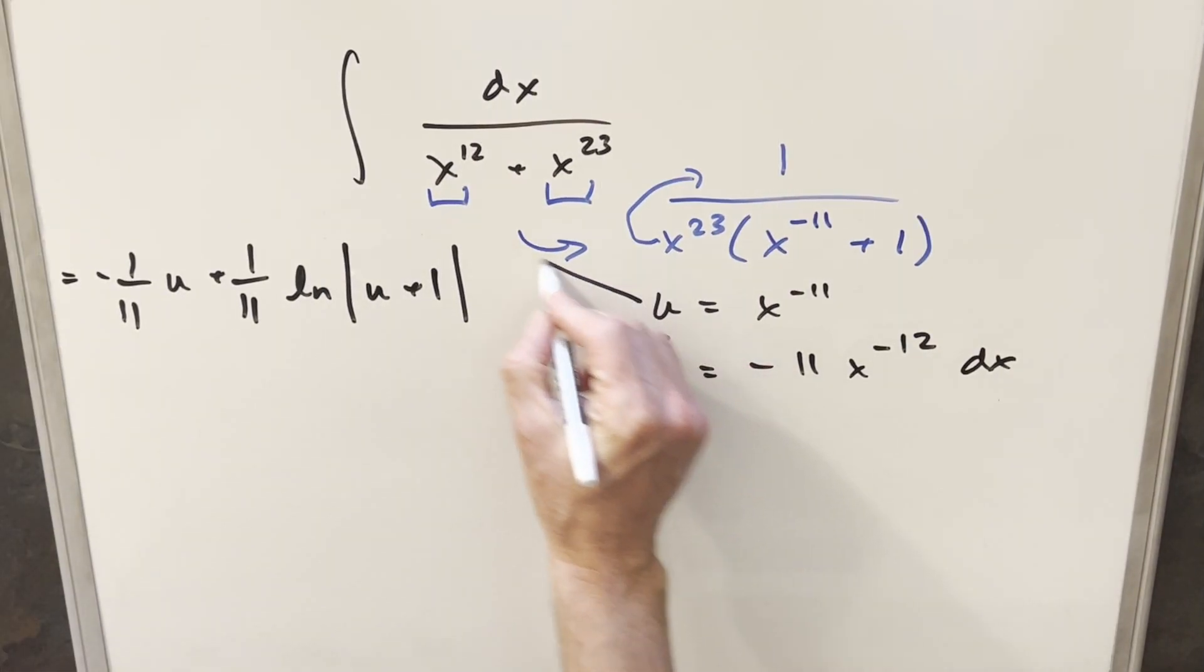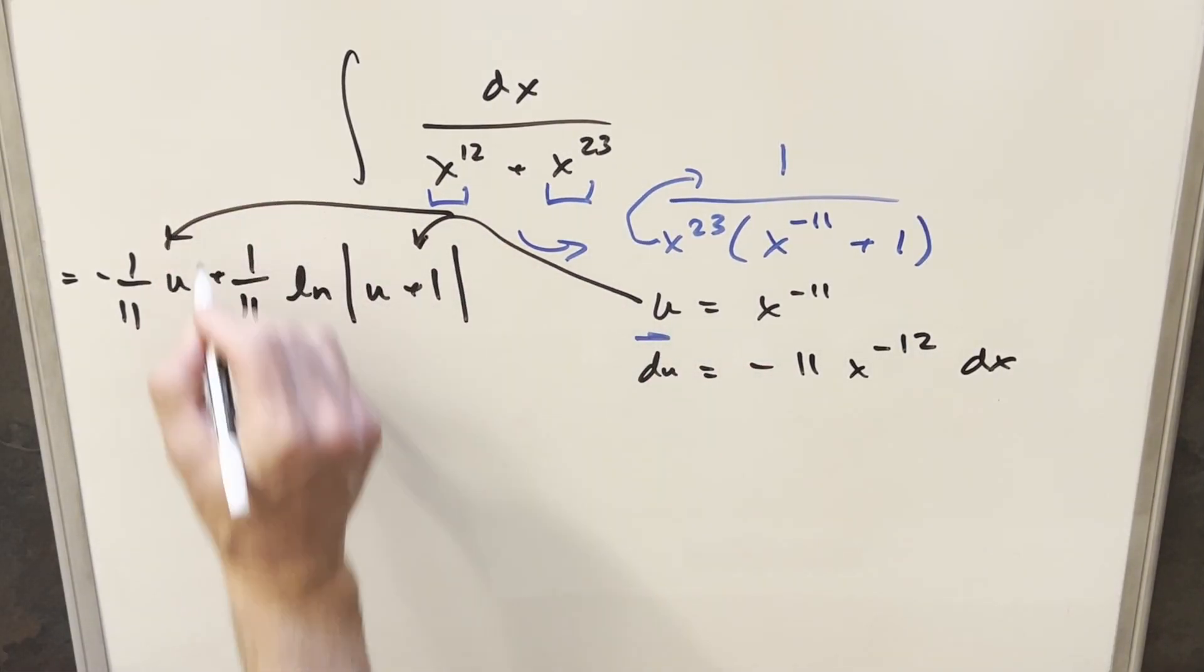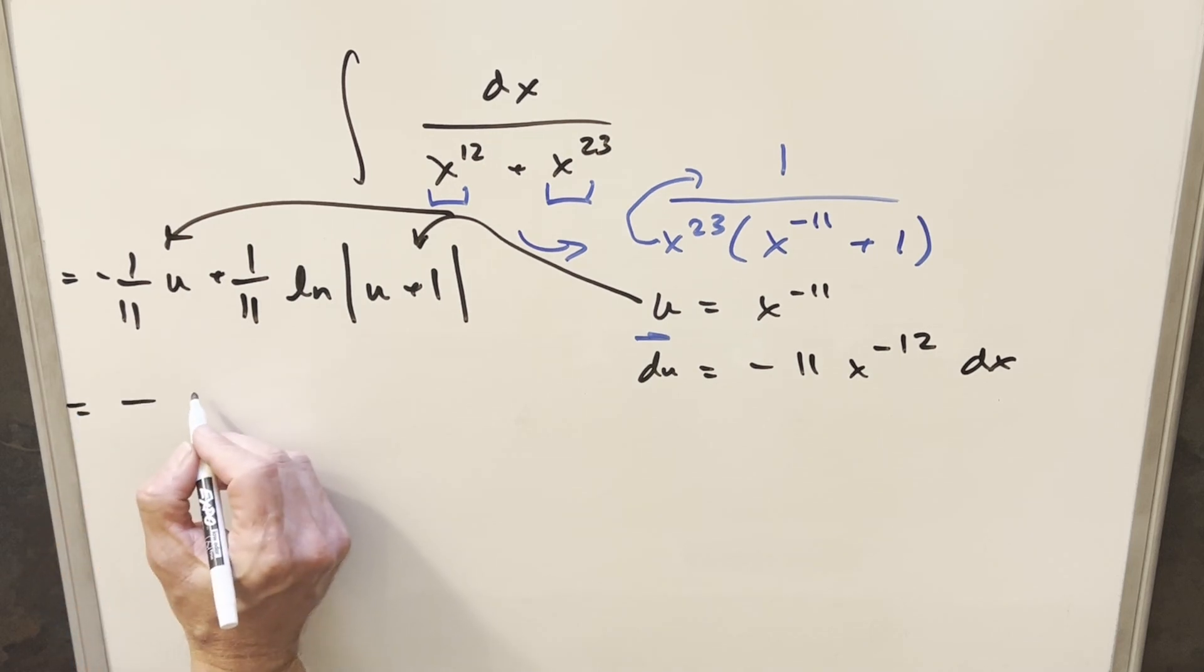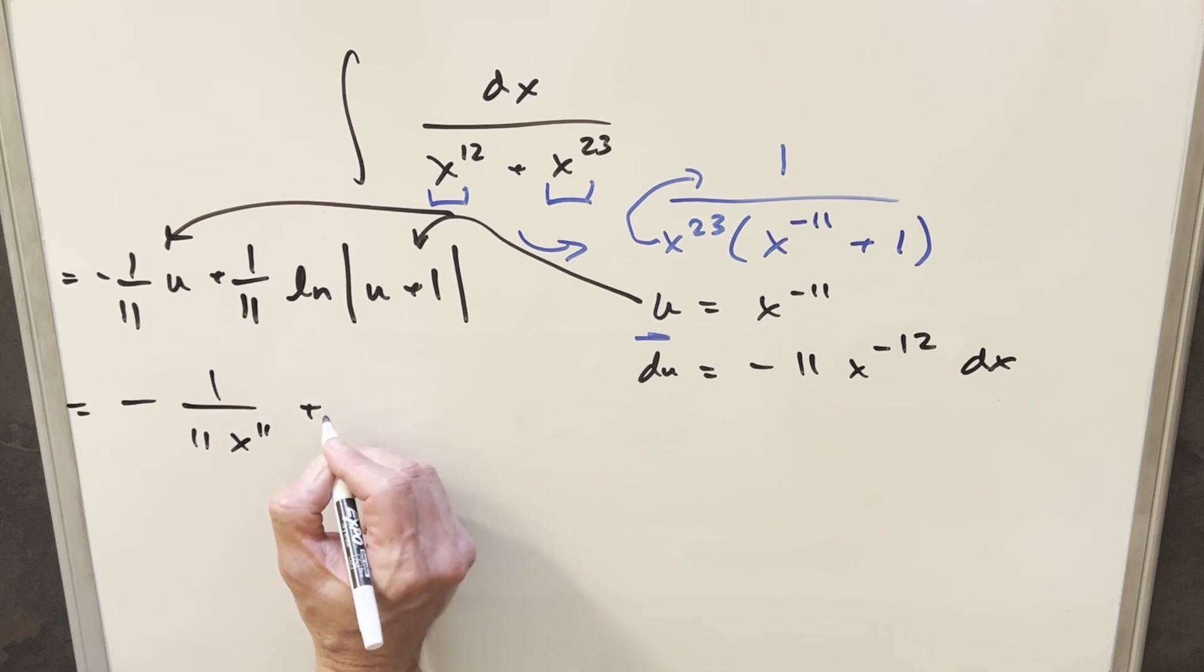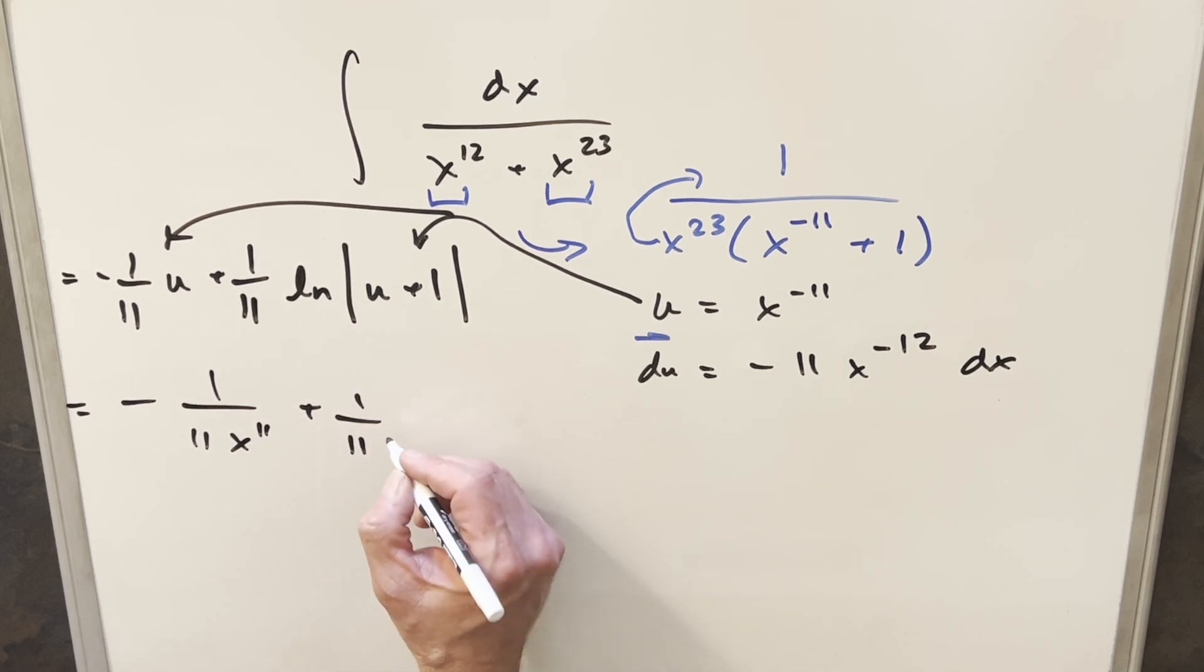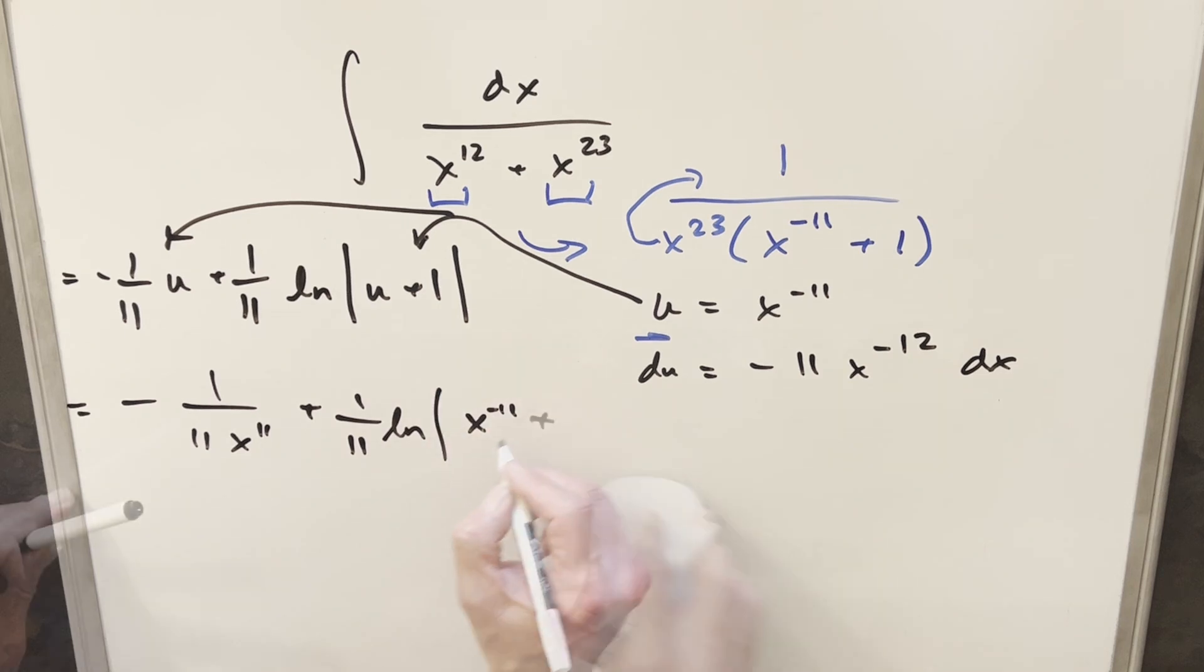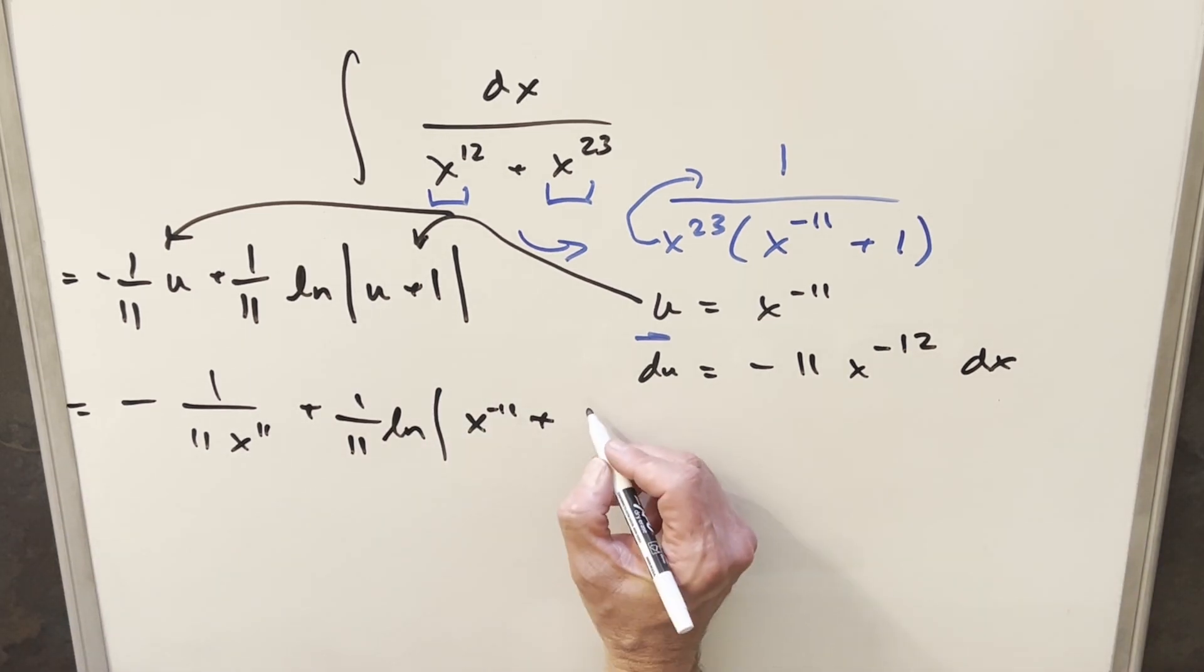But now we just need to back substitute here and here. So this is going to become, I'll write this one as minus 1 over 11. But I'll bring this into the denominator, write this as x to the 11th here plus 1 over 11 natural log. Again, x to the minus 11. What I can do for the 1 actually is write it as x to the 11 over x to the 11.